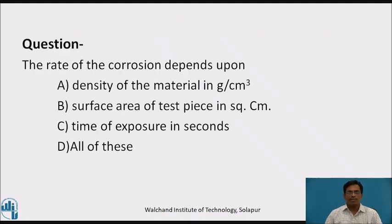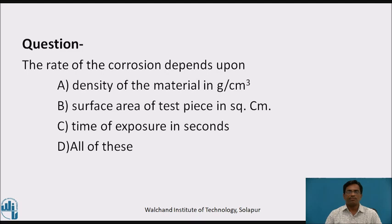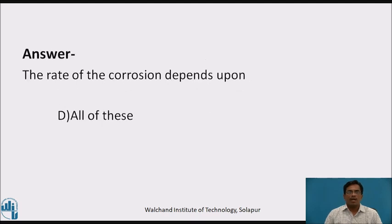Pause the video and answer this question: the rate of corrosion depends on — a) density of the material in grams per centimeter cube, b) surface area of test piece in square centimeter, c) time of exposure in seconds, and d) all of these. The answer is d — all of these.